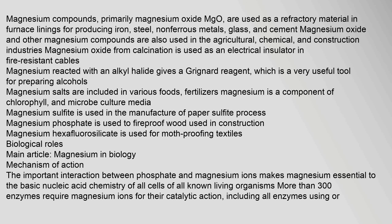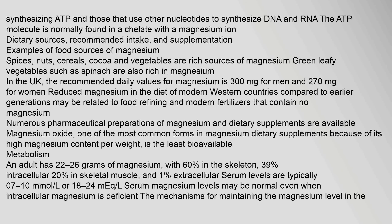The important interaction between phosphate and magnesium ions makes magnesium essential to the basic nucleic acid chemistry of all cells of all known living organisms. More than 300 enzymes require magnesium ions for their catalytic action, including all enzymes using or synthesizing ATP and those that use other nucleotides to synthesize DNA and RNA. The ATP molecule is normally found in a chelate with a magnesium ion.